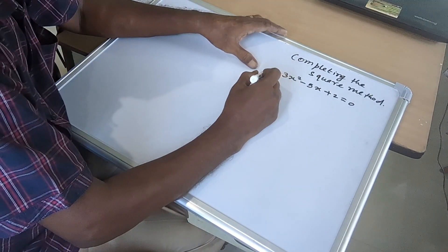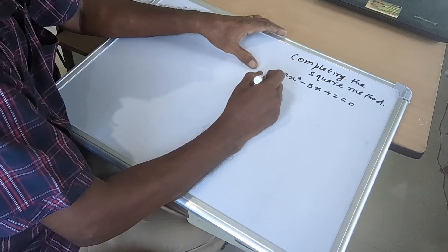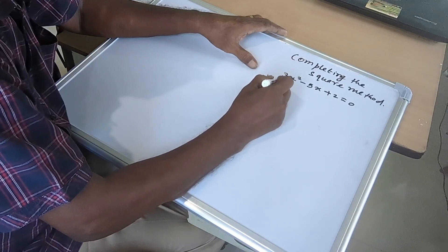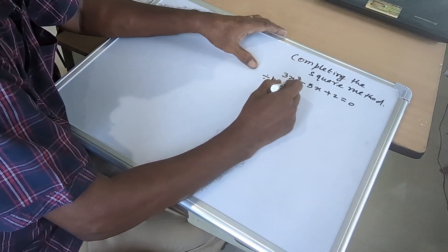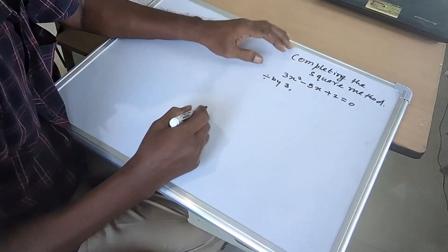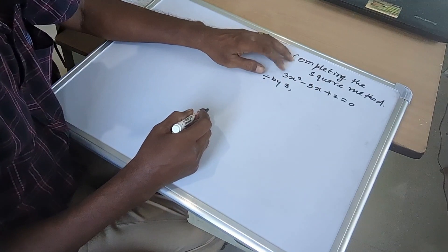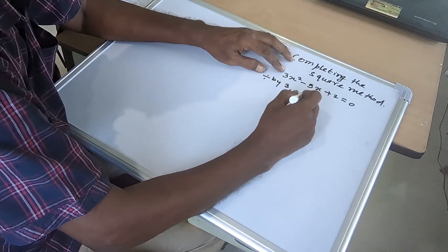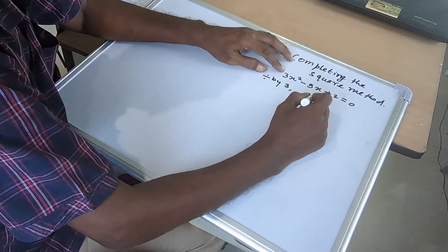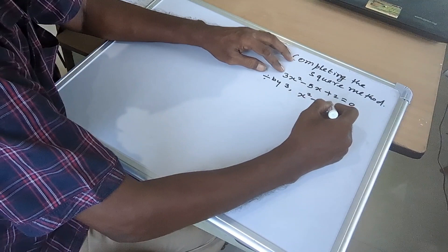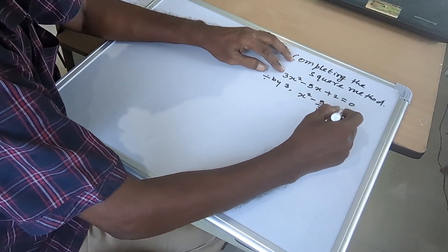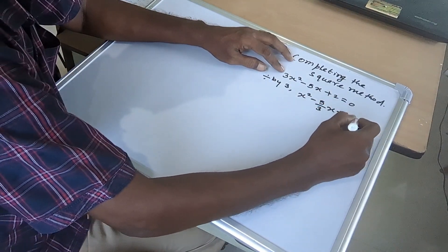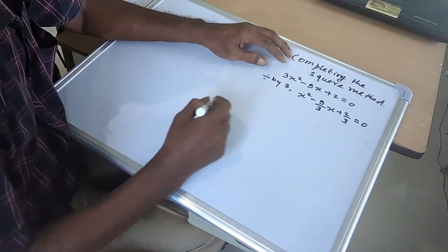First we have to divide by 3 — divide the quadratic equation by the coefficient of x². So it becomes x² minus 5/3 x plus 2/3 equal to 0.